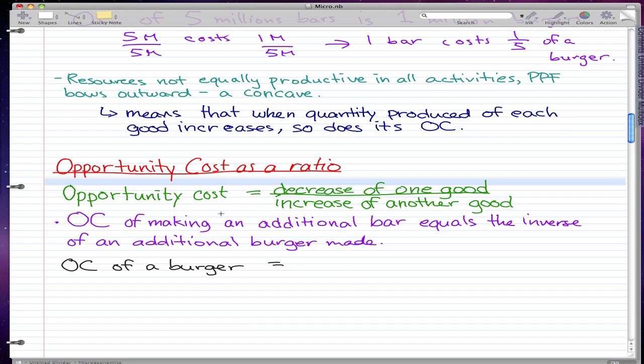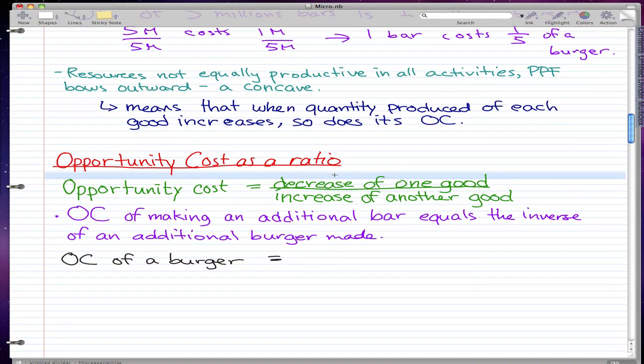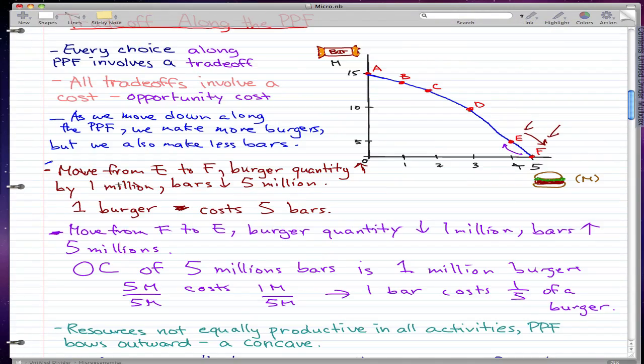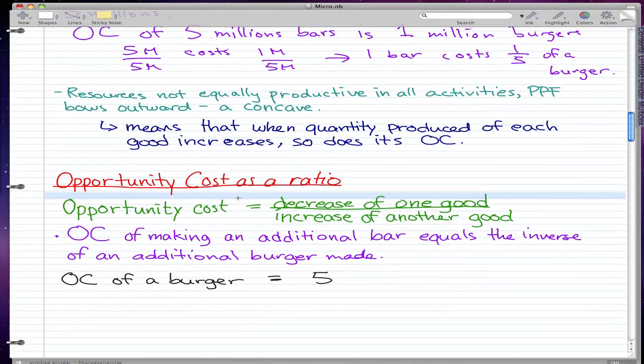Well, to make one extra burger, we have to decrease the supply of another good. And that is the bar. So we know from the last video that one burger costs five bars. So we decrease five bars, five units of the other good, which is five bars, and we increase one unit of the good in focus, which is our burger. So opportunity cost of the burger is five.